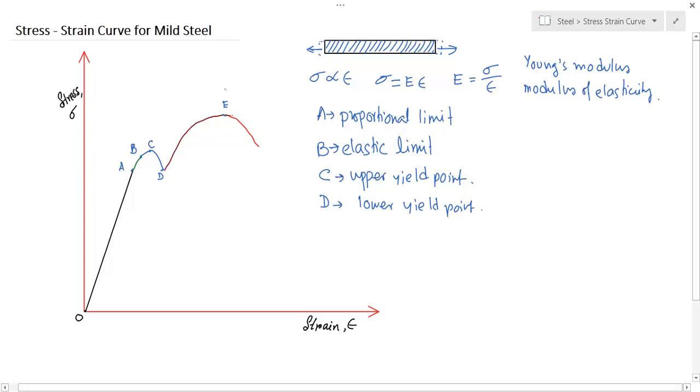If you further increase the load beyond point E, the rod will undergo some local reduction of cross-sectional area like this. This is also termed as necking and can't withstand more load and the curve drops and at some point F, the material breaks. This point F is called breaking point.